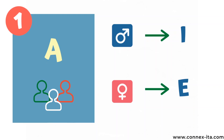With this being said, let's start with the plural of the nouns ending with the vowel A. If they are masculine, in the plural they will end in I. While if they are feminine, they will end in E. Let's look at some examples.